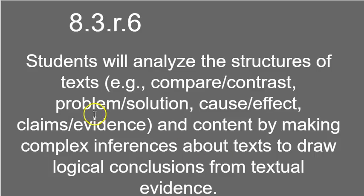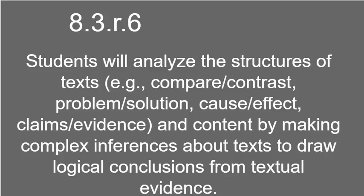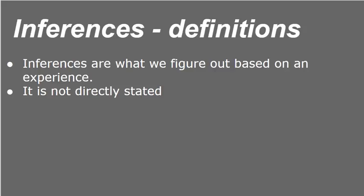Let's take a quick peek back at our standard. We looked at the structures of the text and the content — how the author organized their text and the structures they used to write. Now we want to make complex inferences about those texts to draw logical conclusions from that textual evidence. What is an inference? An inference is what we figure out based on experience and it's not directly stated. In simpler words: an inference is what you figure out happened from the text you're reading — what are they trying to tell you, what do they want you to know, and why did they use those structures?